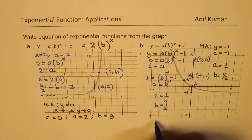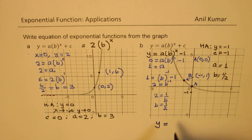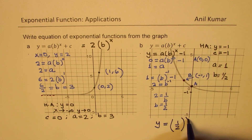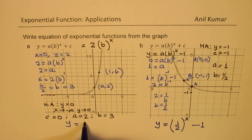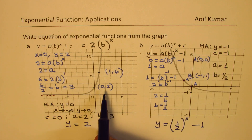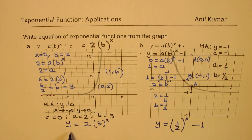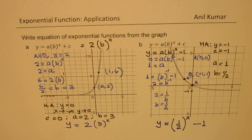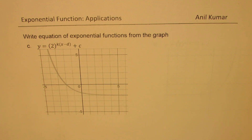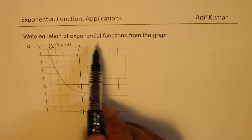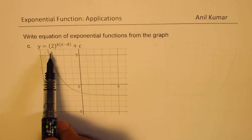So b equals one-half, and the equation for part B is y equals (1/2) to the power of x minus 1. To summarize: the first equation was y equals 2 times 3 to the power of x, and the second is y equals (1/2)^x minus 1. I hope you've understood the basic steps. Now let's see how to get the equation of a transformed function.